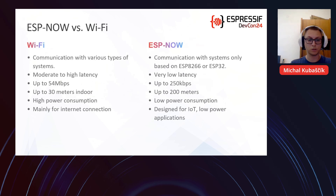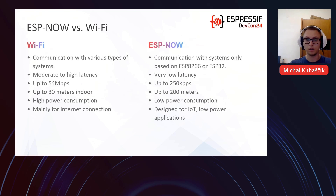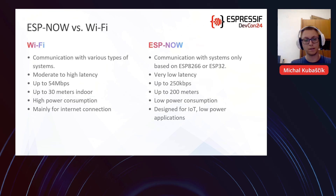Wi-Fi has higher power consumption — for ESP32 modules during connection to Wi-Fi it can have a peak of 1.5 Amperes. ESPNOW has lower power consumption — during sending it draws about 100 milliamps. Wi-Fi is mainly for internet connection, sending to some cloud, REST API, or server, while ESPNOW is designed for IoT and low power applications.